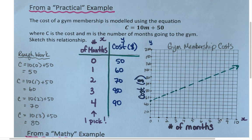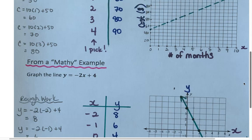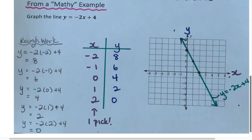Now I can use my line to make some predictions. For example, nine months looks like it's going to be about $140. That's an example of how to do a table of values from a practical example, and we're going to extend that to help us draw a table of values for a more algebraic example.